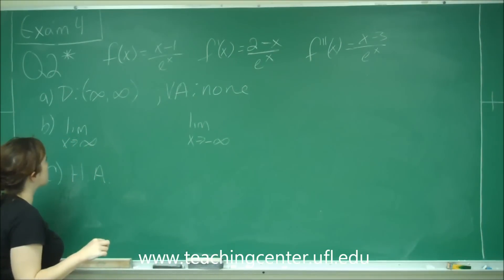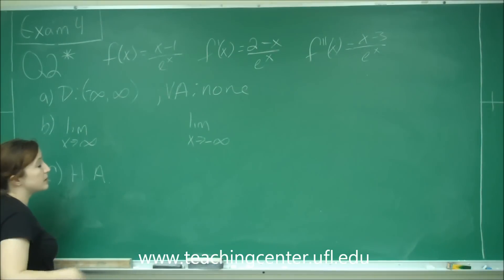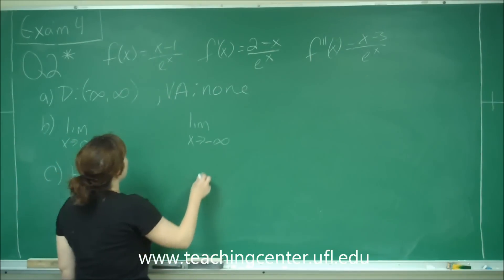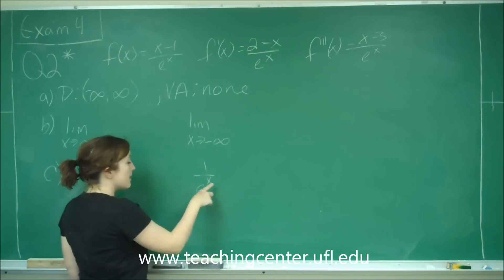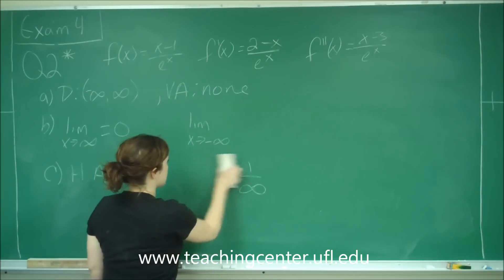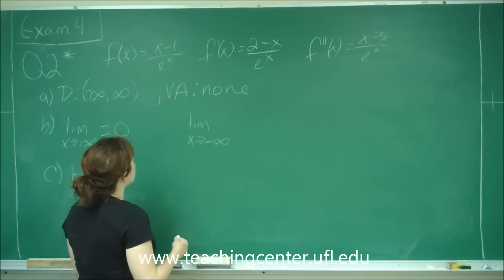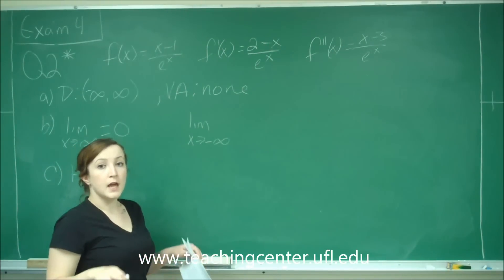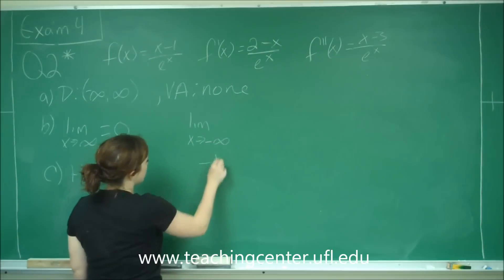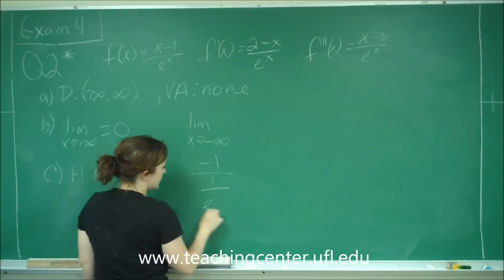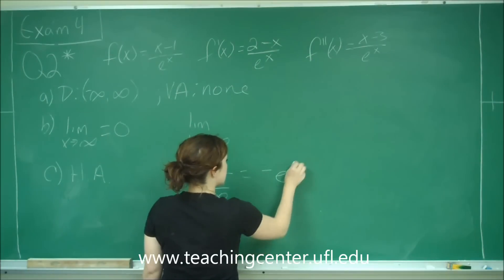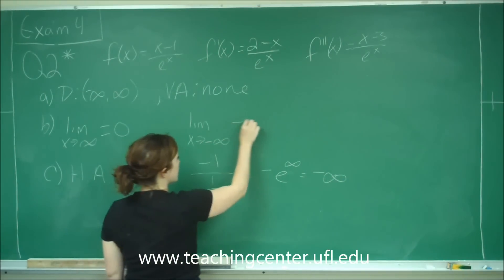The next portion asks for the limit as x approaches infinity. Looking at f of x, as x approaches infinity we get infinity over infinity, so we apply L'Hôpital's rule and get 1 over e to the x. As x approaches infinity, that gives us 1 over infinity, which is 0. For the limit as x approaches negative infinity, x is now negative, so we think of it as negative x minus 1 over e to the x. Taking derivatives gives negative 1 over e to the negative infinity, which is 1 over that, and flipping gives negative e to the infinity — which is negative infinity.